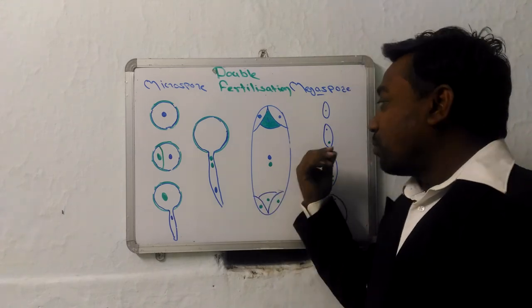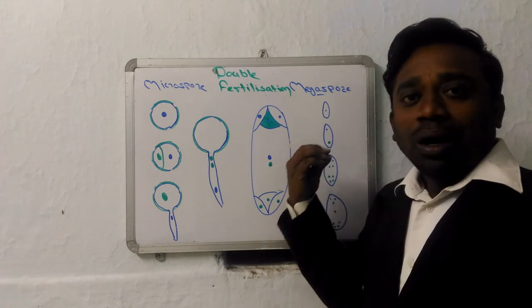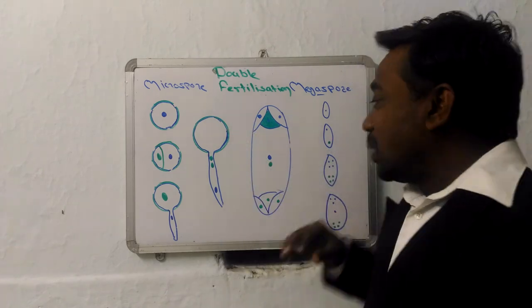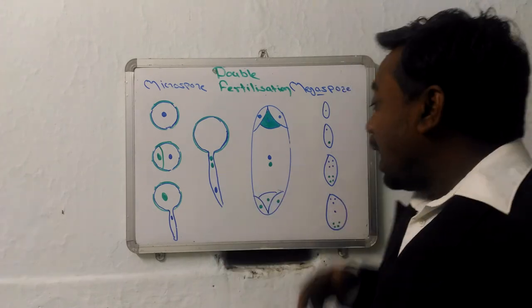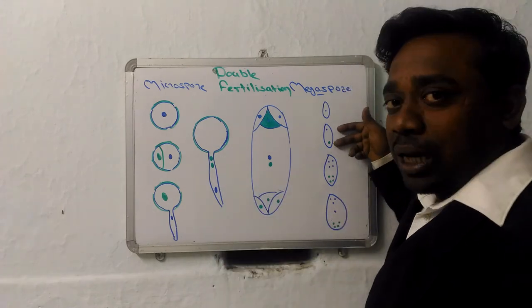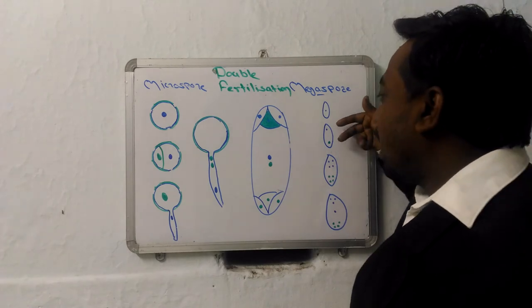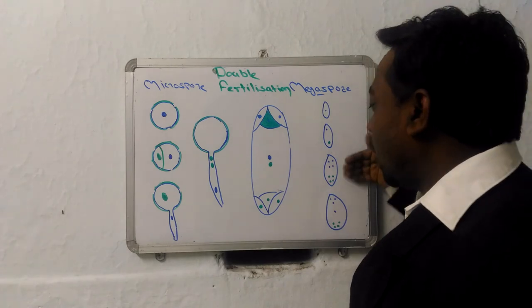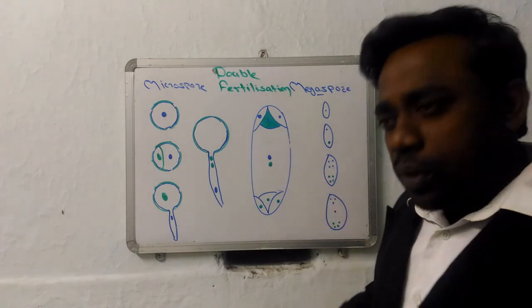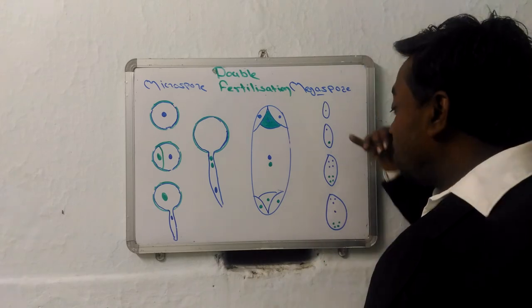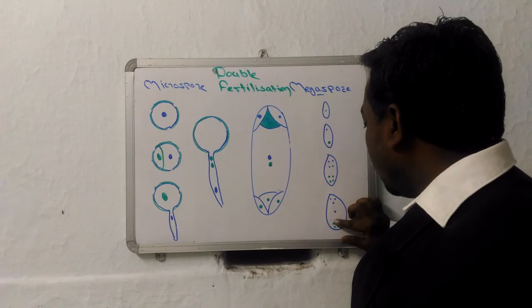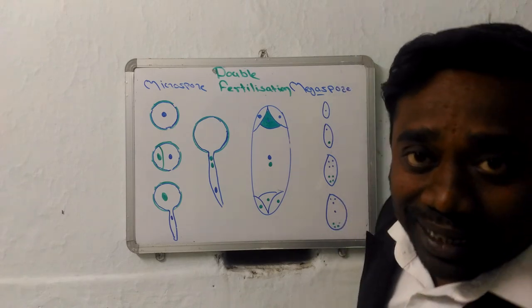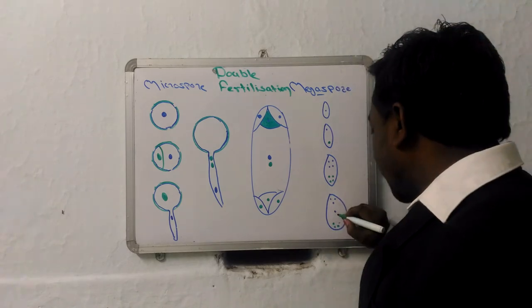After the first nuclear division, you will get two-nucleated stage. In this two-nucleated stage, you have emergence of central vacuole, so that both the nuclei will move to both the poles. After moving to both poles, they will again undergo mitosis and from these two nuclei, you will be having four nuclei. At maturity, one of the nuclei from each pole will migrate towards the center and they will form secondary nucleus.